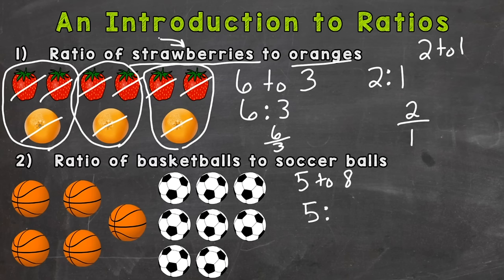Now this particular ratio cannot be simplified. The greatest common factor, and only factor between five and eight, is one. So this is simplified. So for every five basketballs, there are eight soccer balls.